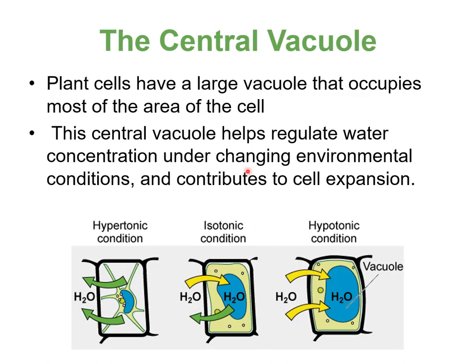The large central vacuole in plant cells occupies most of the cell's area and helps regulate water concentration under changing environmental conditions, contributing to cell expansion. We'll talk about tonicities in our next chapter — you can see what plant cells look like in hypertonic, isotonic, and hypotonic conditions, depending on the concentration inside and outside the cell.